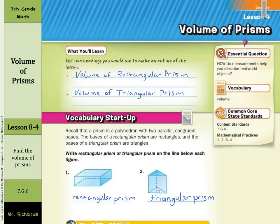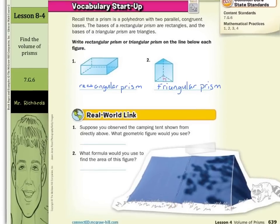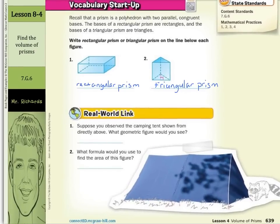And now with our real-world link: suppose you observed a camping tent from directly above. What geometric figure would you see? Well, from directly above, that would be a rectangle. And the formula for rectangles: area equals length times width.